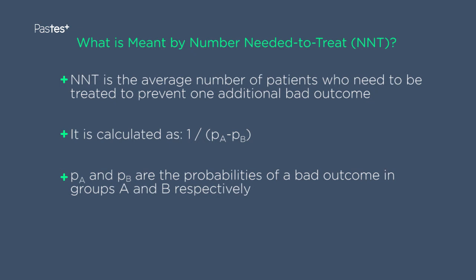In a comparative situation, what we really mean here is that in terms of the performance of the new treatment relative to the comparative treatment, number needed to treat is the average number of patients who would need to be treated with the new treatment to prevent one additional bad outcome compared to what would have happened in the comparative treatment.